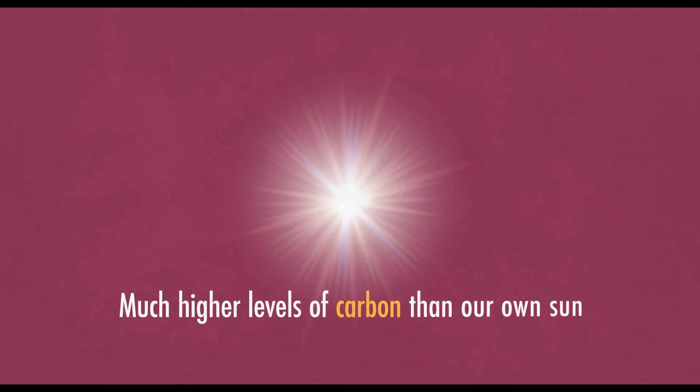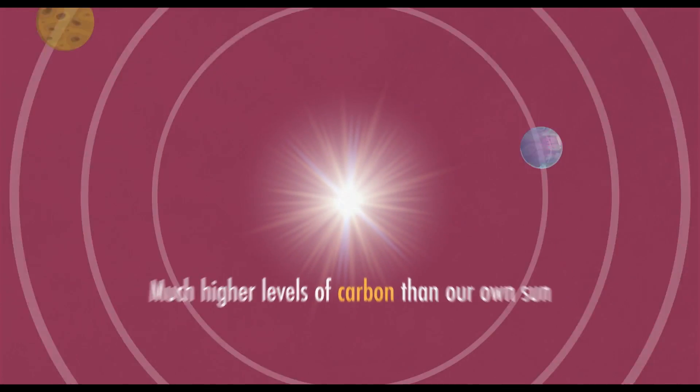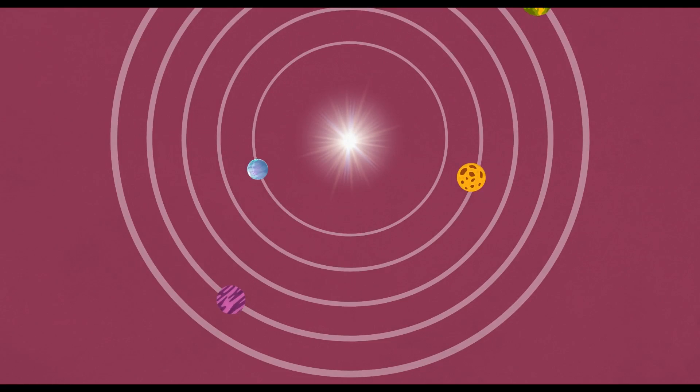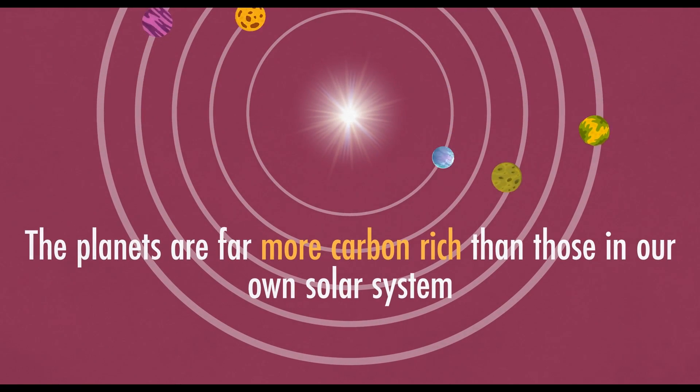Observations of the parent star have shown that it contains much higher levels of carbon than our own sun. If all of the objects of the system are made from the same primordial disk of material, as this is thought to be the case with most star systems, then it would suggest that the planets too are far more carbon-rich than those in our own solar system.